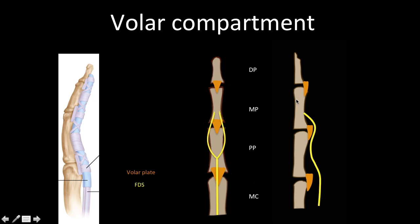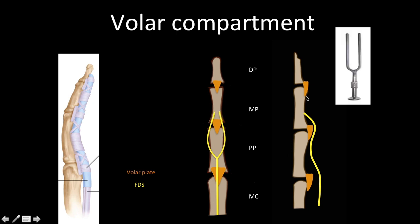Next is the flexor digitorum superficialis. This is a single tendon up to the base of the proximal phalanx, where it divides into two tendon slips that attach to the base of the middle phalanx — giving it the appearance of a tuning fork. The stem of the tuning fork is the single tendon, and after splitting it forms the prongs of the tuning fork.